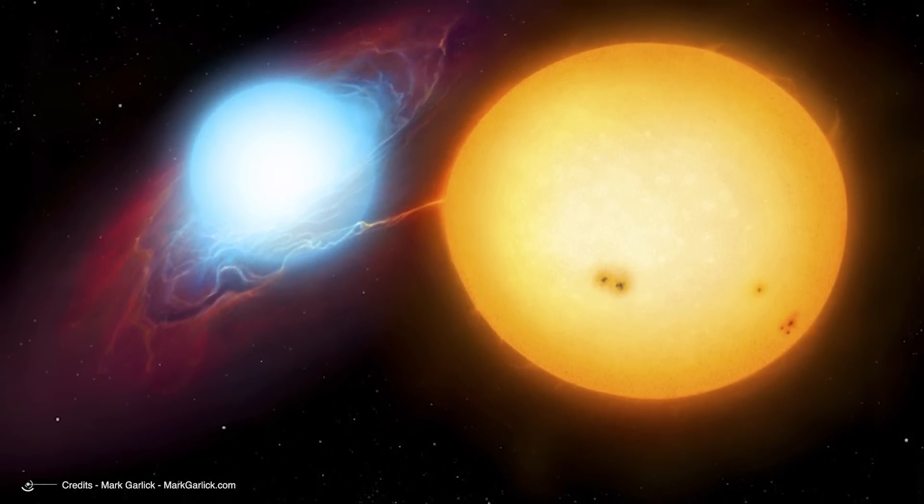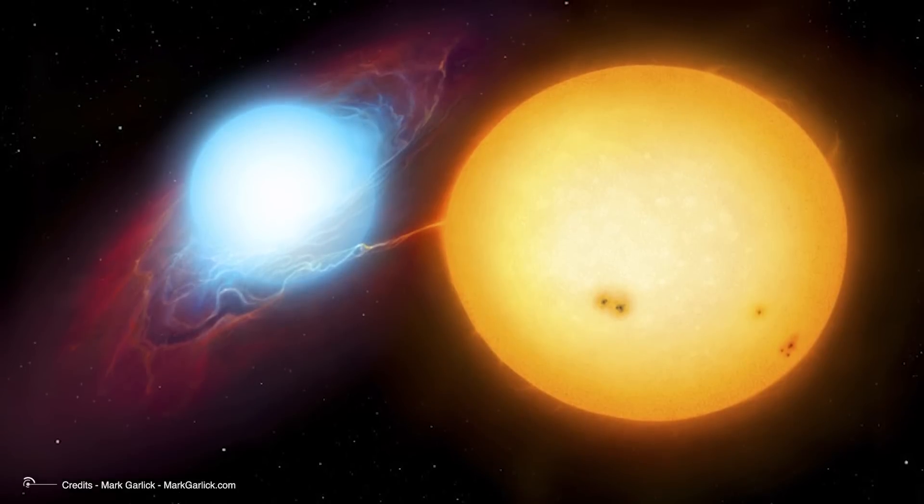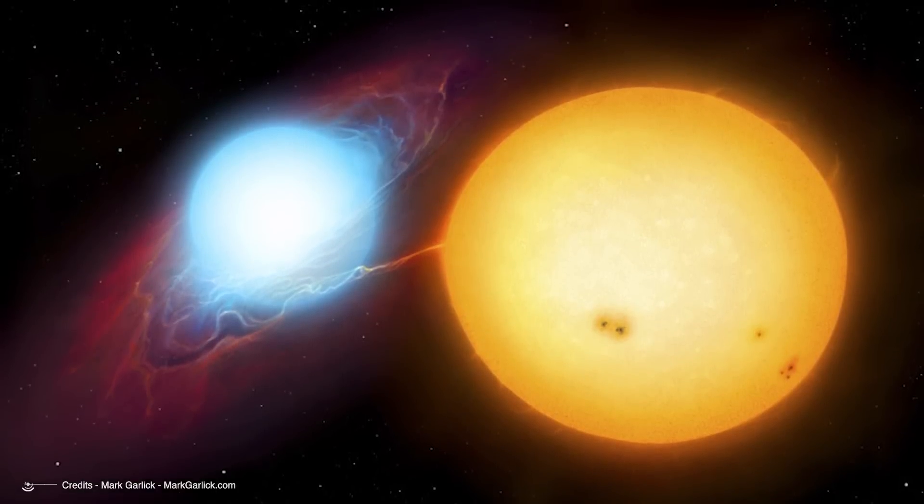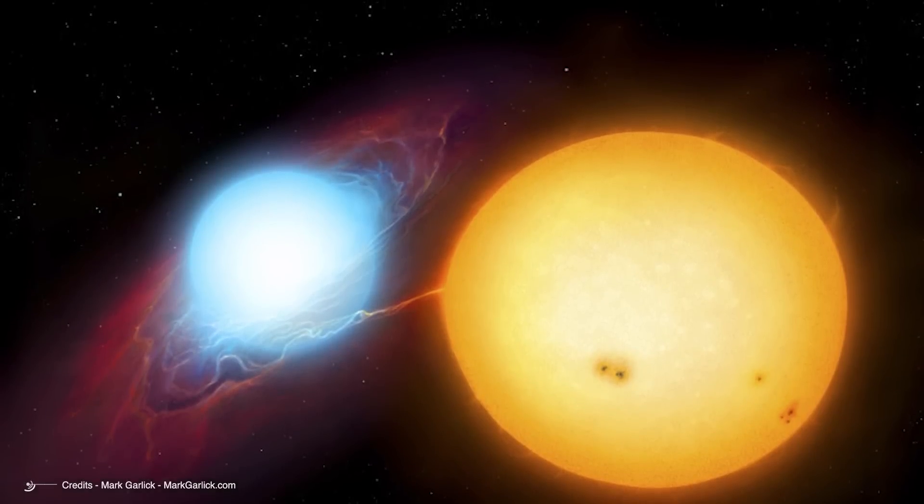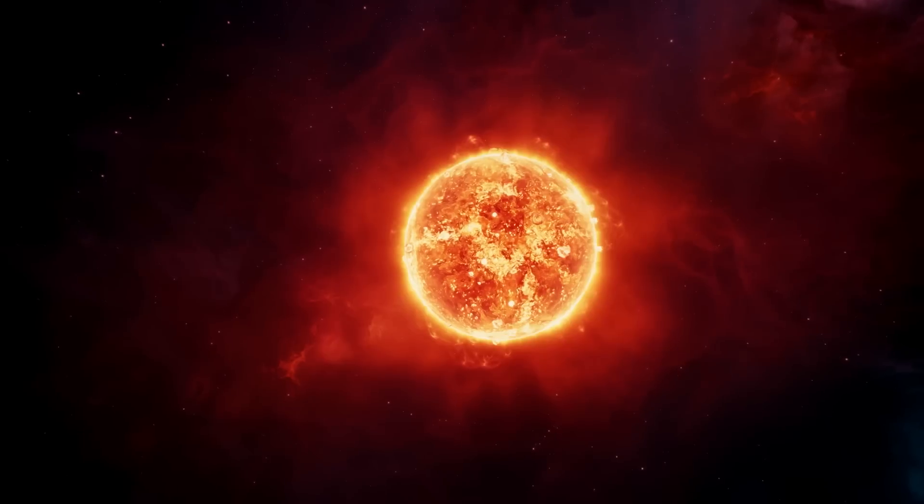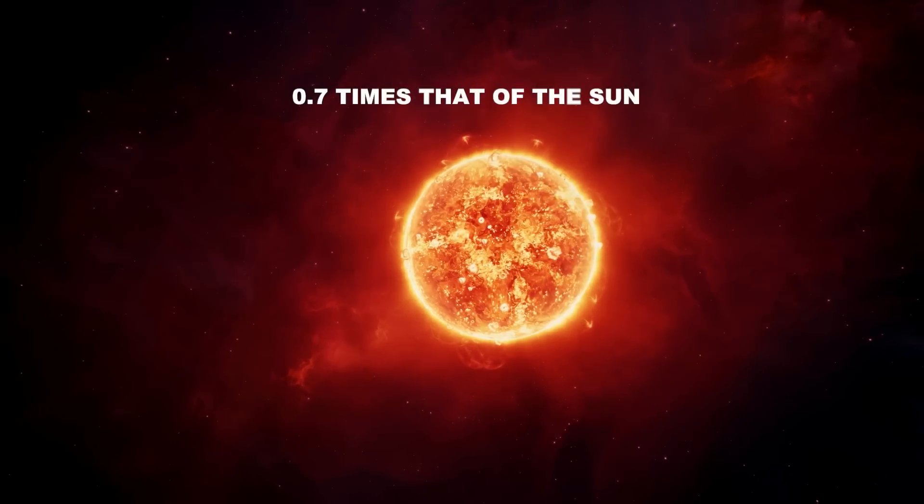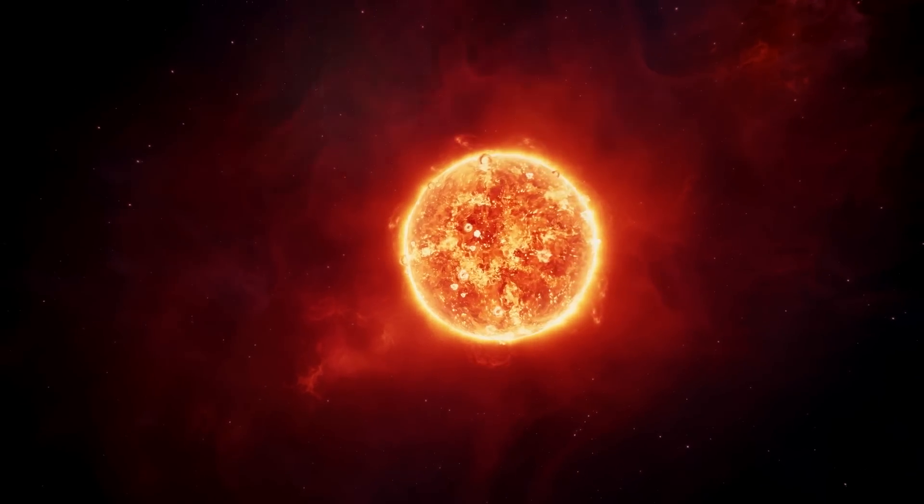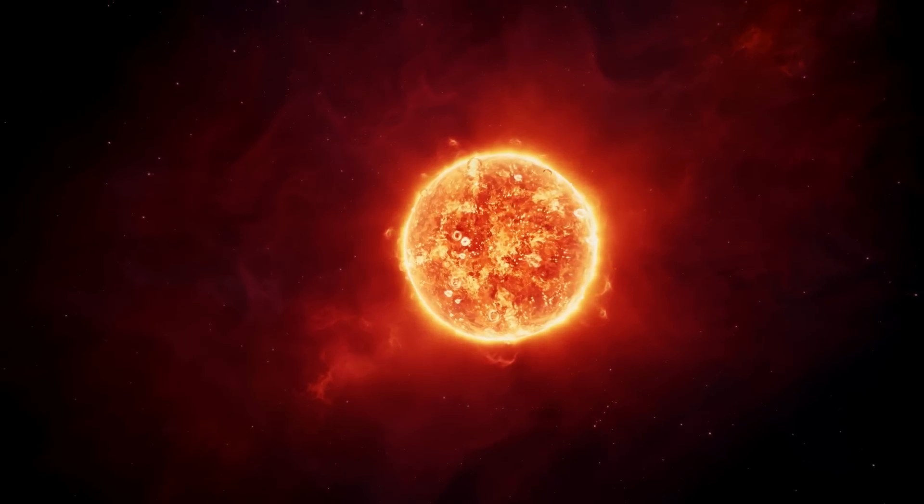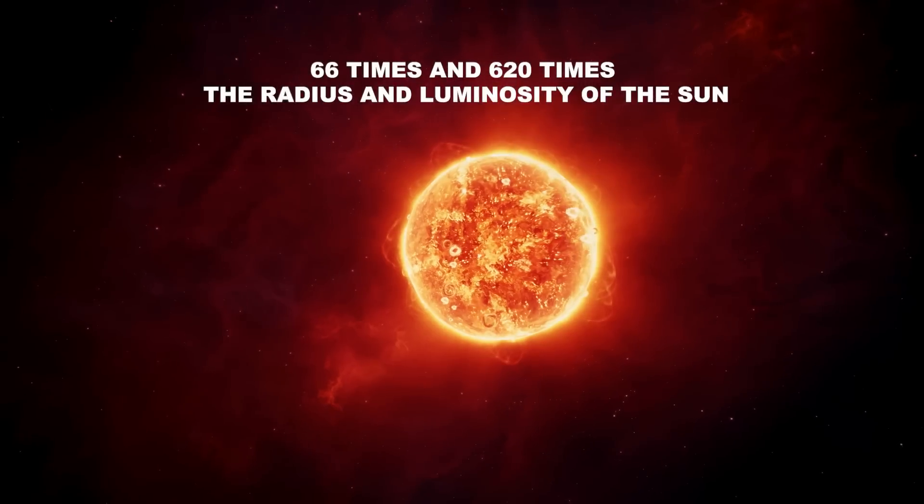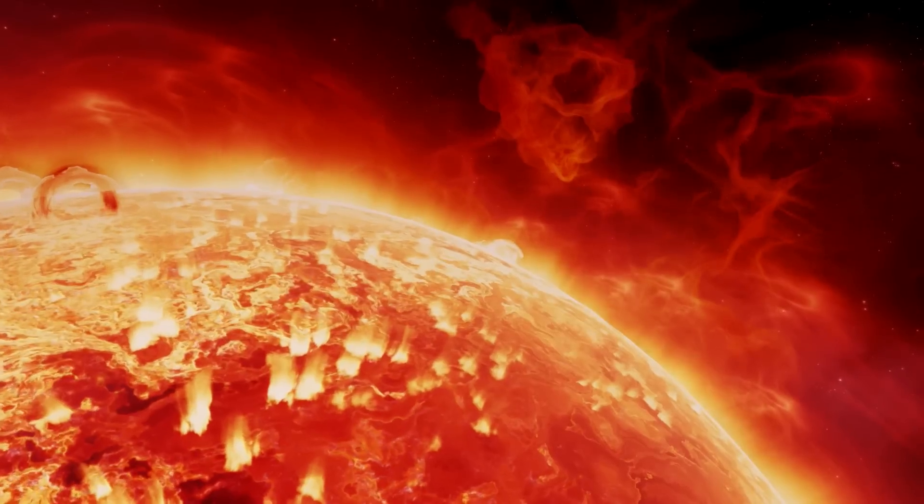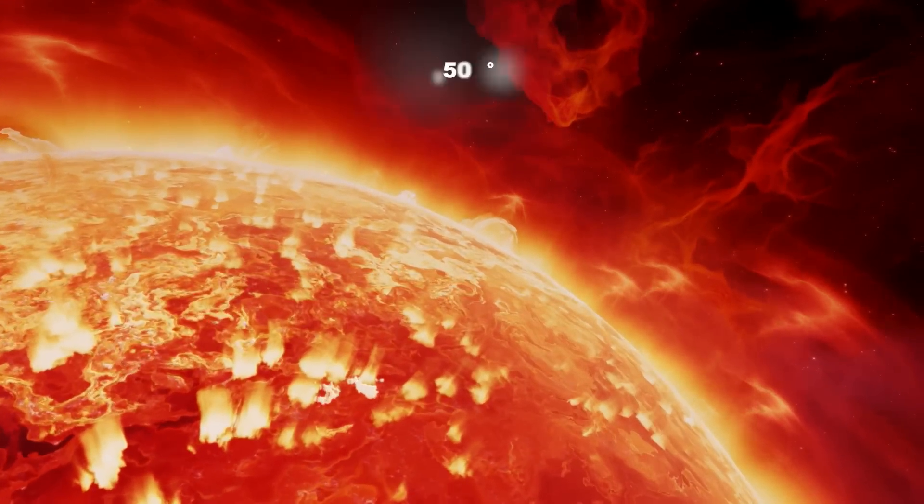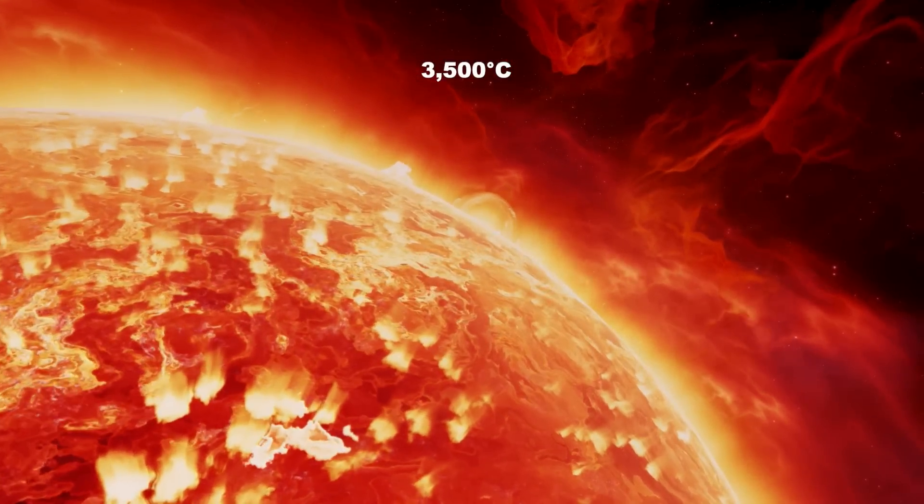The two stars in the system have very different characteristics. One of them is an expanding red giant, a star that has exhausted all the hydrogen in its core and now sustains itself only with the fusion of hydrogen in its outer shell. The star has a mass that is 0.7 times that of the Sun, but with a larger radius and luminosity, respectively 66 times and 620 times the radius and luminosity of the Sun. Its surface temperature is about 3,500 degrees Celsius, which makes it appear reddish in color.